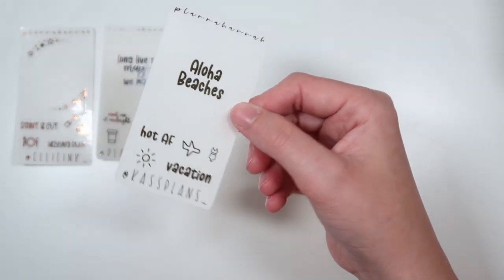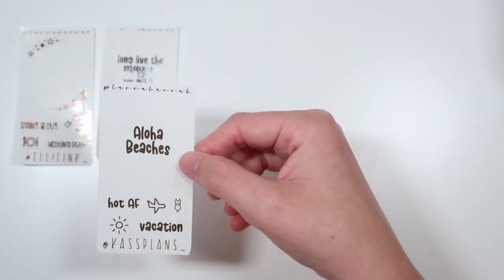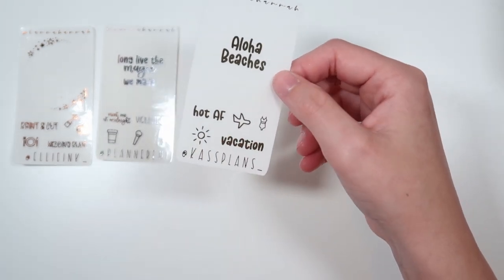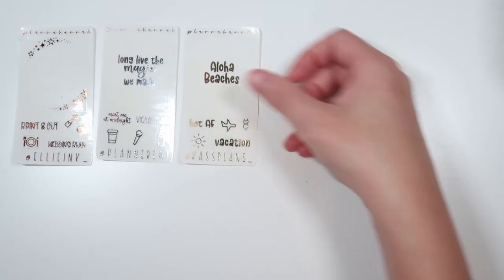Then we have Cassidy's freebie. This is being shown to you in antique gold I believe. And the quote says Aloha beaches. We have hot AF and vacation scripts. And we have a sun, an airplane, and a bathing suit.